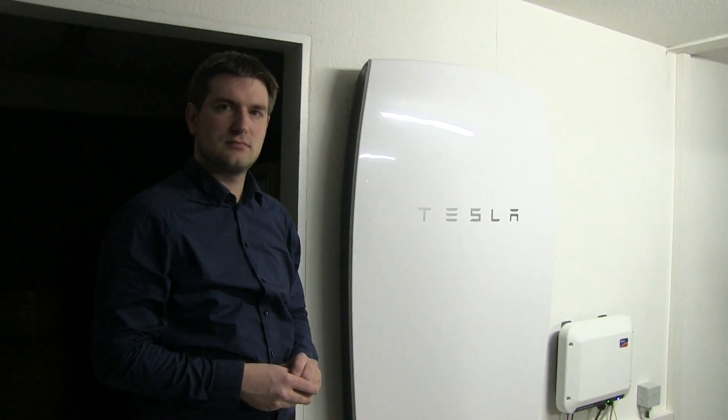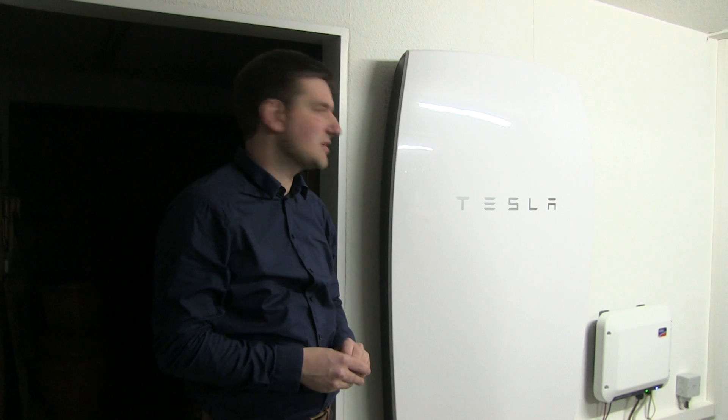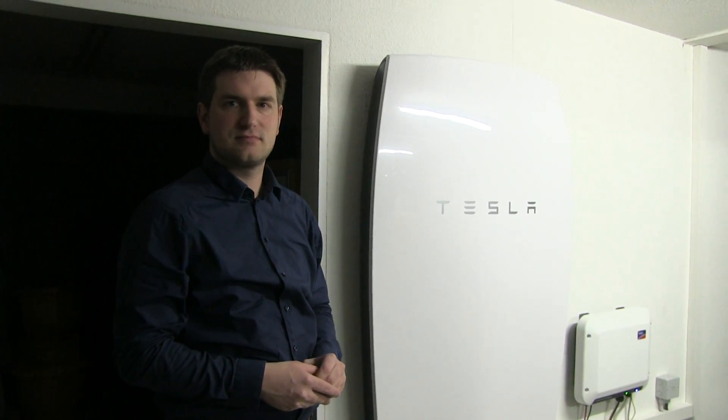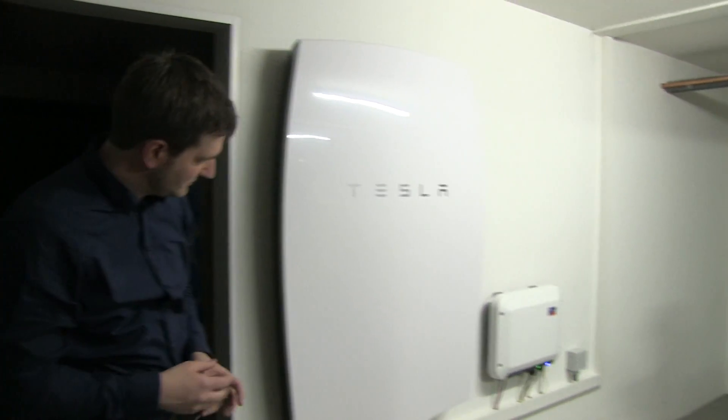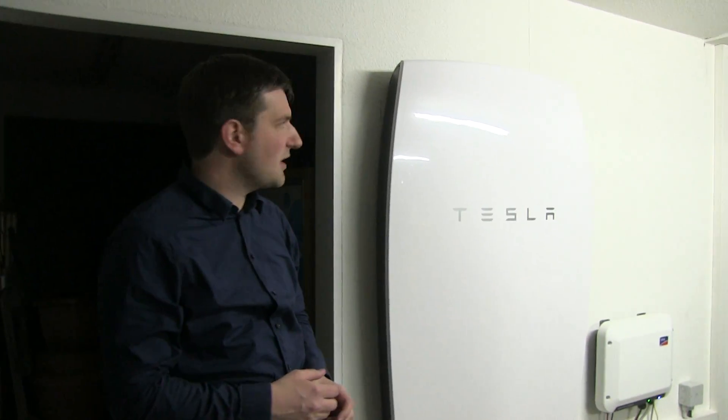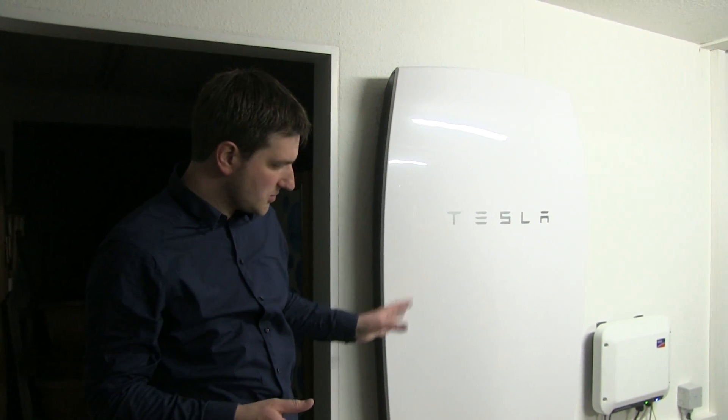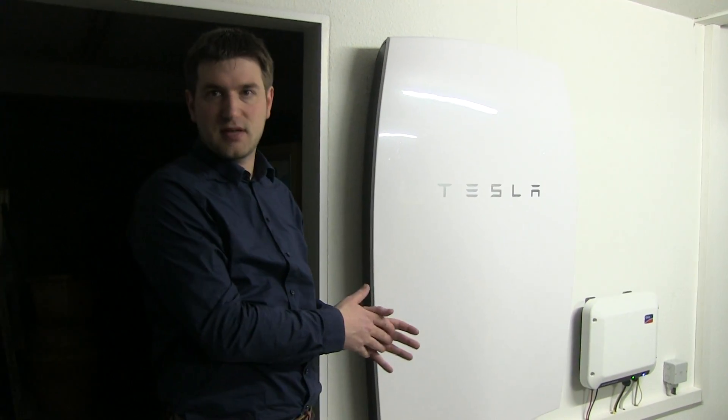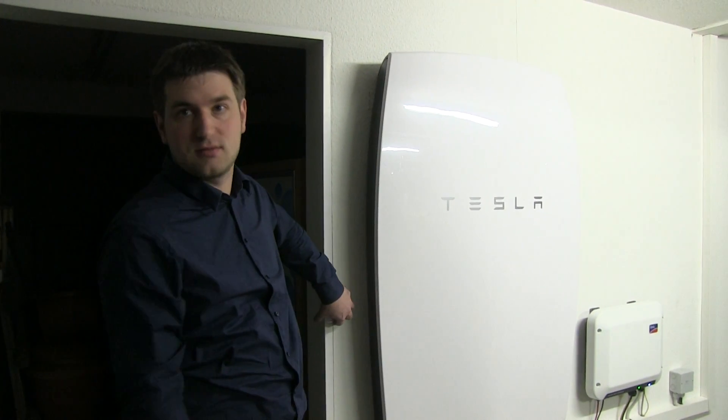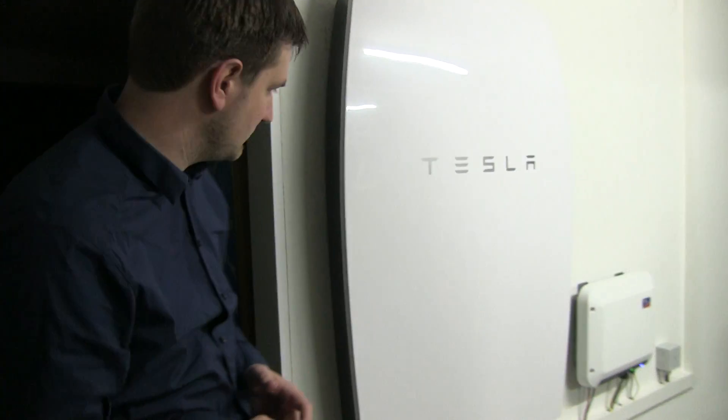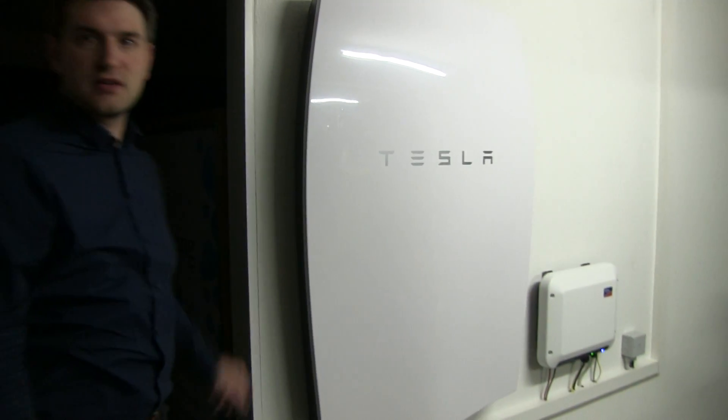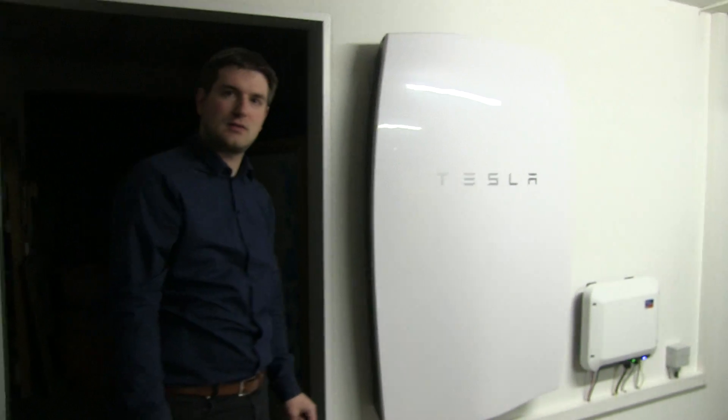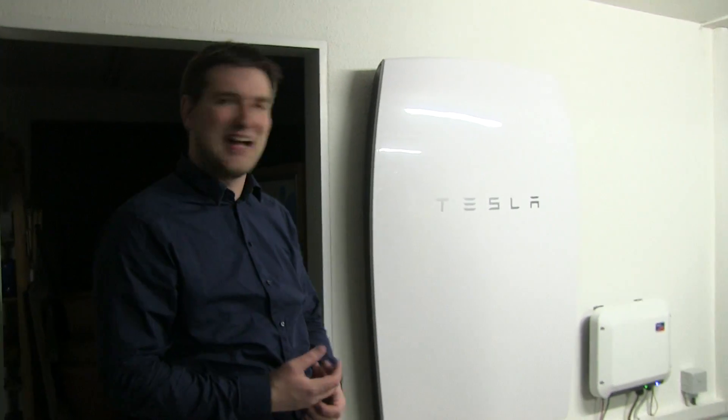So you actually need two persons to install the Powerwall. And you also have to figure out if the wall can handle the weight. The wall has to handle the weight and the Powerwall 2 you also can put on the ground and only connect to the wall. Because, I mean, what kind of wall is this? Is it concrete? This is a concrete wall with a wooden part on it. So if you have a weak wall, then you cannot mount it there. You should not do that.